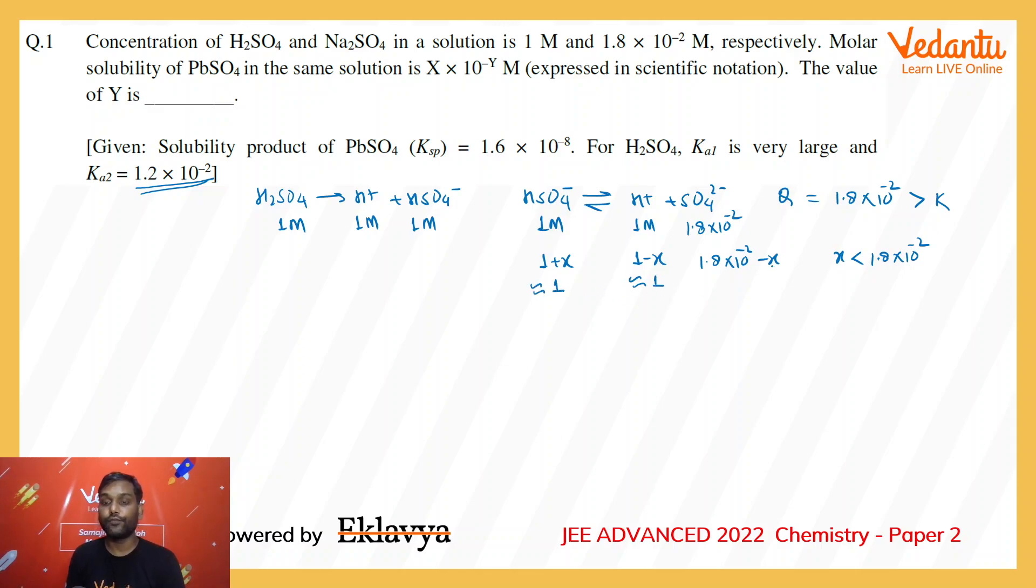Then to find out the resultant sulfate in the solution I will use the K expression, which is K value which is 1.2 × 10^-2, that is equal to concentration of H+ (1 molar) and sulfate (that I need to calculate) divided by HSO4- (1 molar).